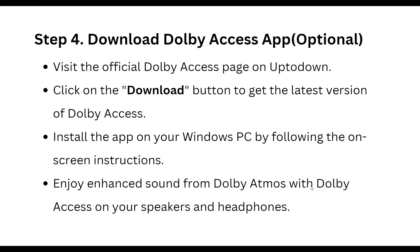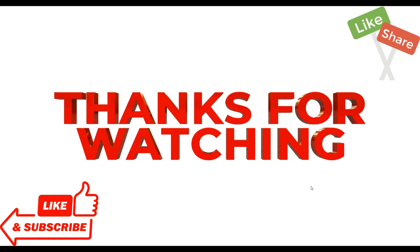Optionally, download the Dolby Access app. Visit the official Dolby Access page, click the Download button to get the latest version, install the app on your PC, and follow the on-screen instructions to enjoy enhanced sound from Dolby Atmos on your speakers and headphones. That covers all the steps — thanks, guys!